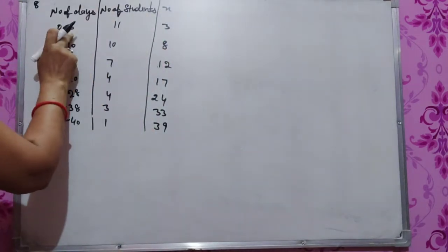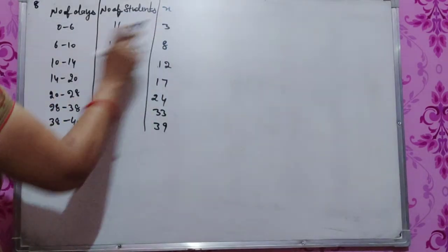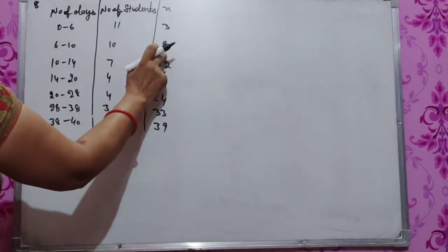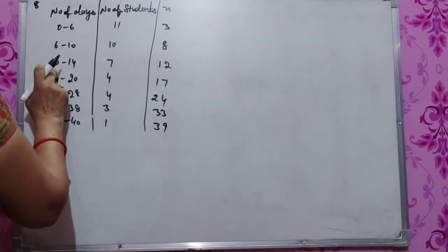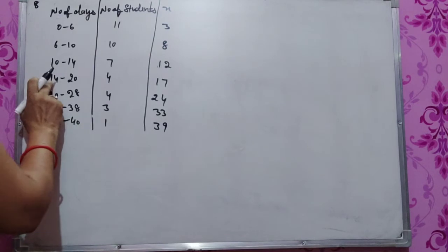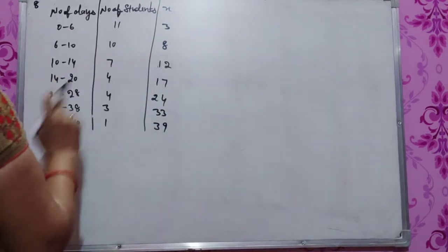we have 0 and 6, which gives us 3. 6 and 10, midpoint 8. 10 and 14, midpoint 12. 14 and 20, plus 34 divided by 2 equals 17.